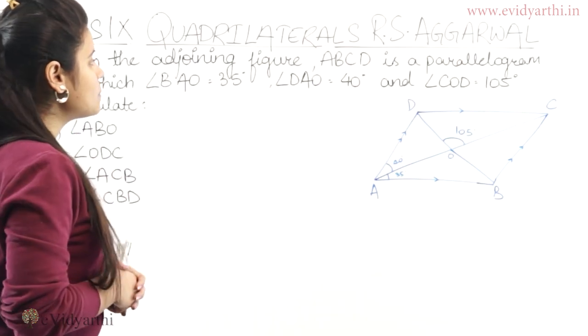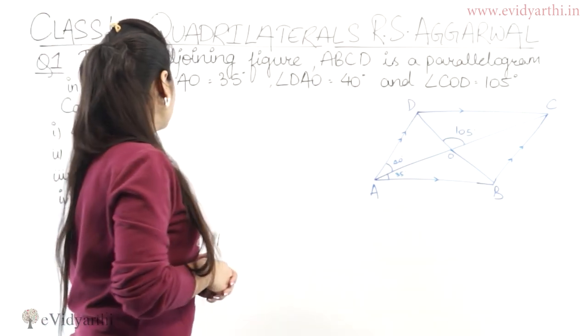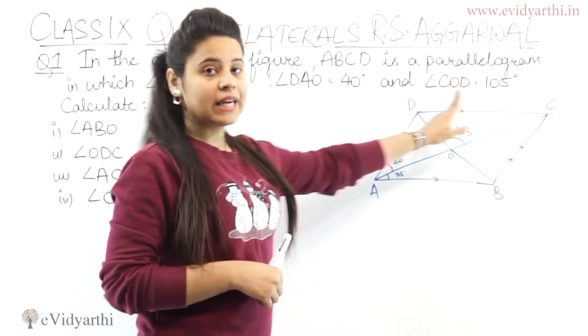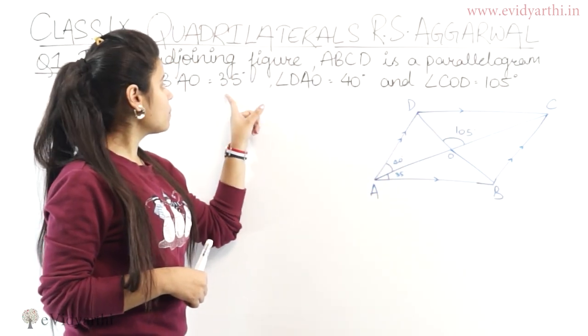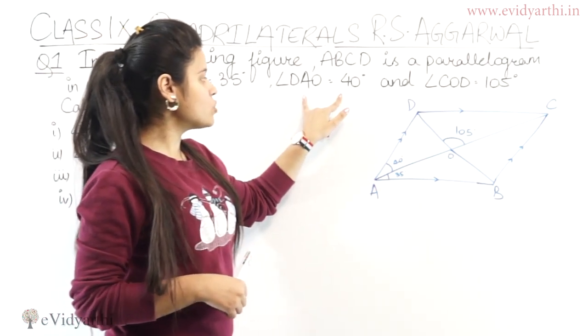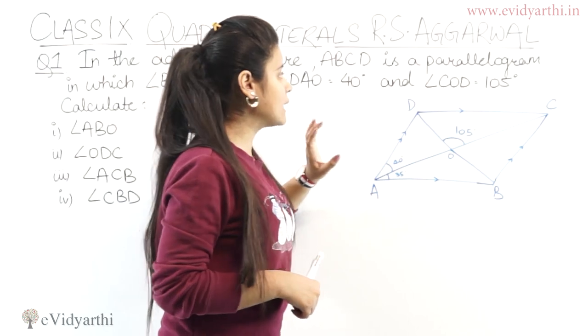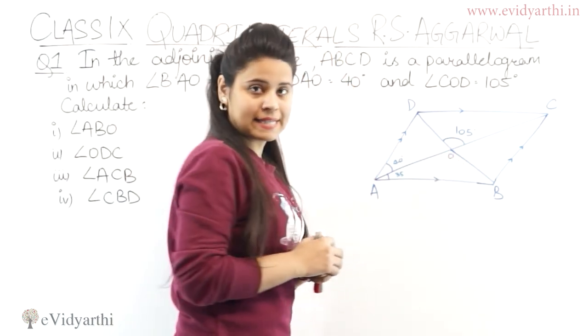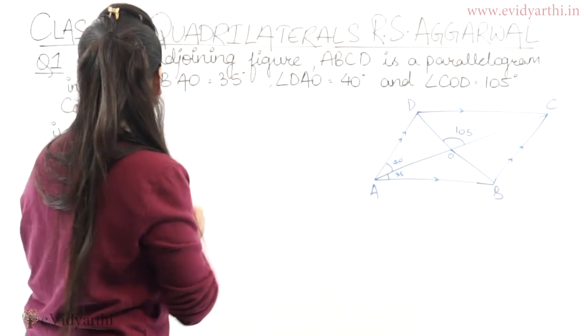The first question we are taking is: In the adjoining figure ABCD is a parallelogram in which angle BAO equals 35 degrees. So we have a parallelogram given and we have an angle given 35 degrees. And DAO equals 40 degrees which is this angle, and COD equals 105 which is this angle. So we have three angles given to calculate.